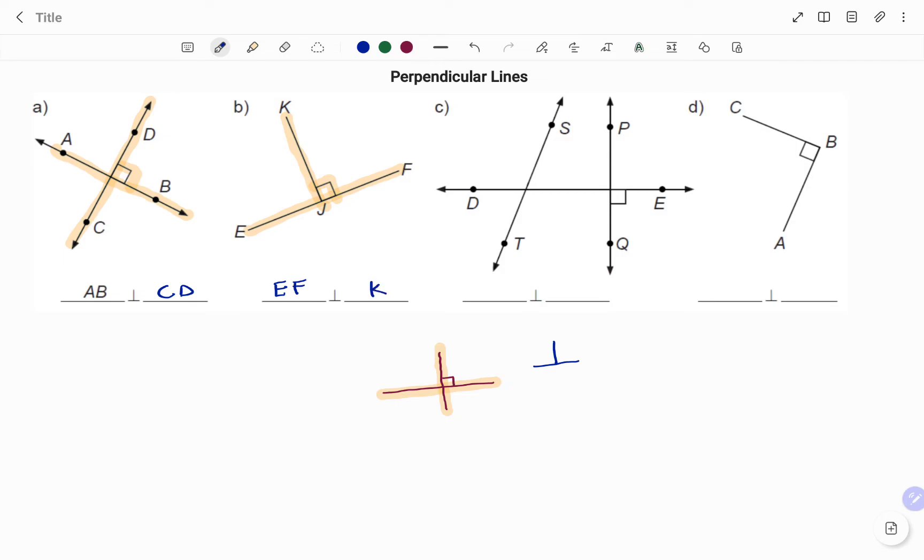In the next example, I'm going to look for two lines that intersect at 90 degrees. So I have the line PQ as highlighted, and the line DE. You can see at the point of intersection that both form 90 degrees, so I have the line DE perpendicular to the line PQ.